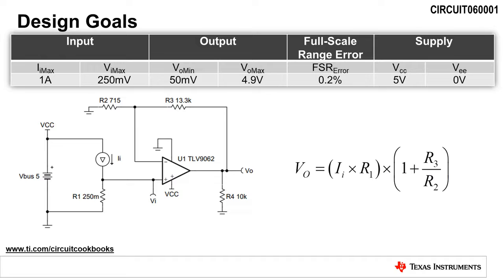In this circuit, the maximum input voltage, or sense voltage, is set to 250 millivolts. In order to maintain a linear output, the minimum output voltage is set to 50 millivolts. Finally, an accuracy goal of 0.2% full-scale range error, or FSR error, is desired and a single 5-volt supply is used because it is common for this type of circuit.